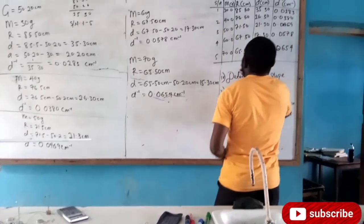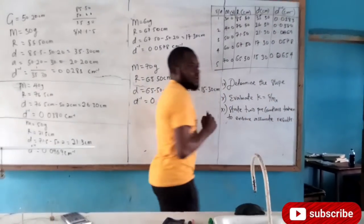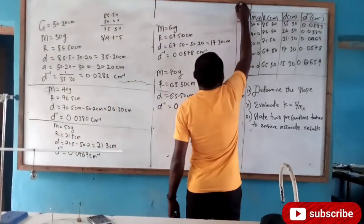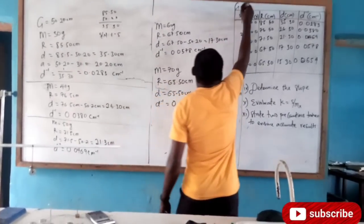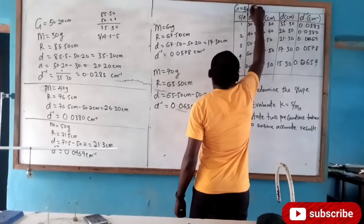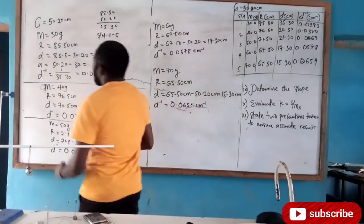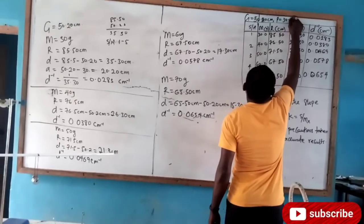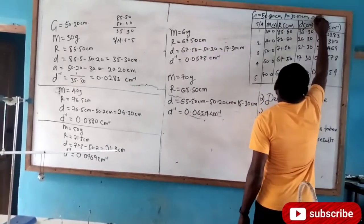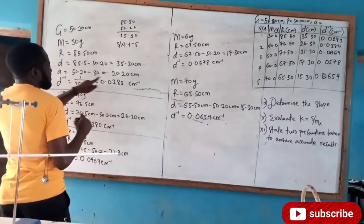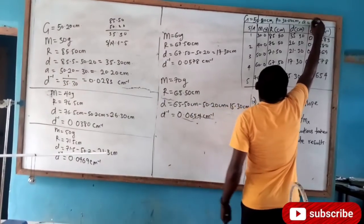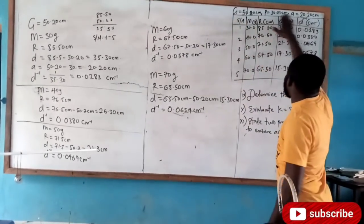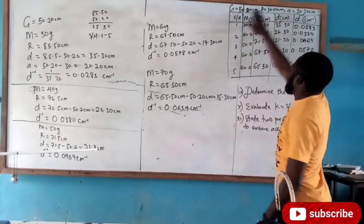Here is our table. Remember that constants measured in the experiment, like G, need to appear at the top corner of our table. G = 50.20 cm, P = 30.00 cm, and A = 20.20 cm. When you erase or shade something in your table, it is a subtracted mark. Your table takes the highest marks aside from your graph.